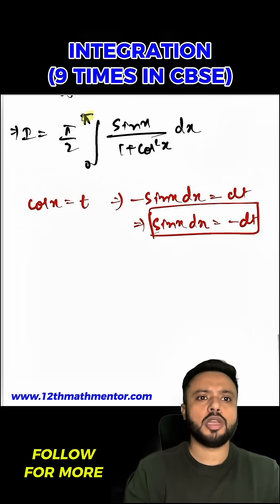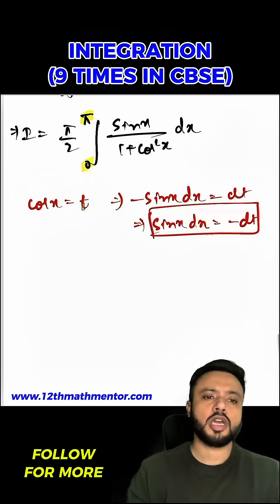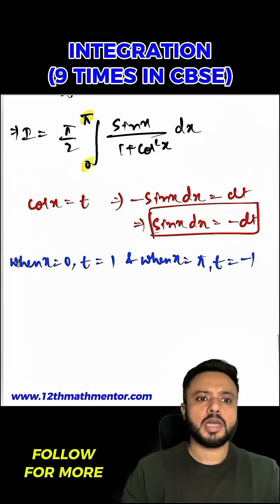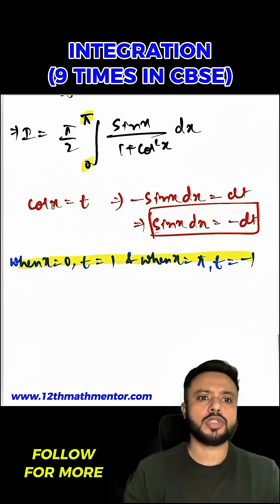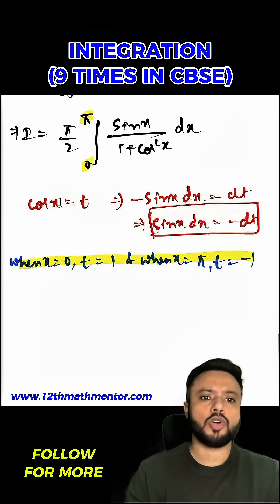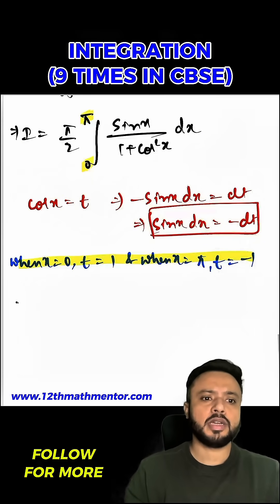Now the limits given were 0 to π for x, but since I am converting x in terms of t, we have to find the new limits of t. When x equals 0, cos 0 equals 1, so t equals 1. When x equals π, cos π equals negative 1, so t equals minus 1.